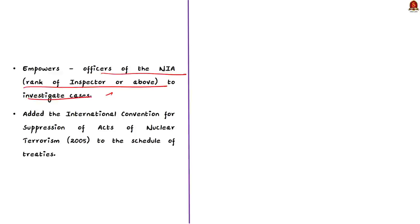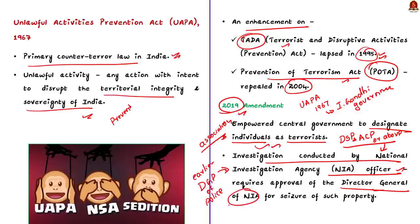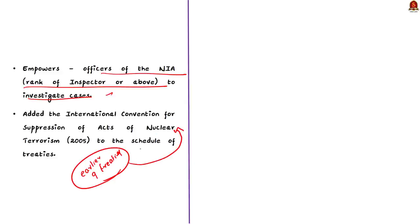The second major amendment: initially, investigation of cases were conducted by officers of the rank of deputy superintendent or assistant commissioner of police or above. But the amendment additionally empowered officers of the National Investigation Agency of the rank of inspector or above to investigate cases. The third major change is with respect to approval for seizure of property by NIA. An investigating officer is required to obtain prior approval of the director general of police to seize properties connected with terrorism. The amendment added that if the investigation is conducted by an NIA officer, approval of the director general of NIA would be required for the seizure of property.